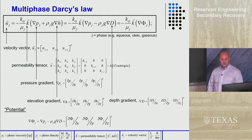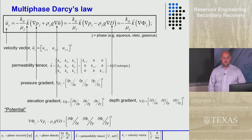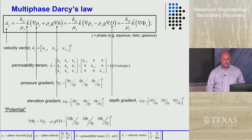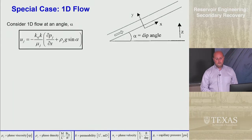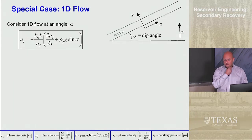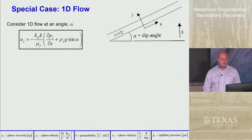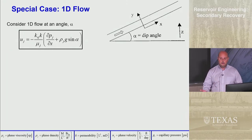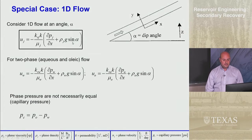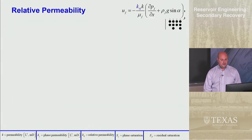K_RJ is the relative permeability of phase J. In the 1D form, you can still have a gradient in depth or elevation. U is now a scalar for phase J, K is a scalar permeability, you only have one direction, and there's a sine of the angle term we'll return to. You can have this equation for each phase.